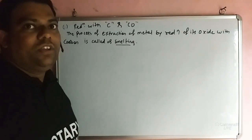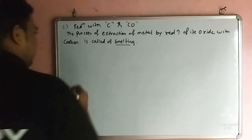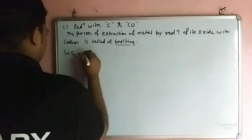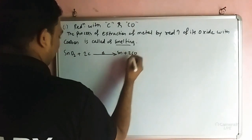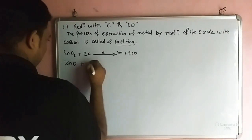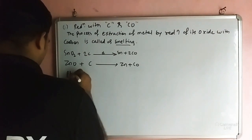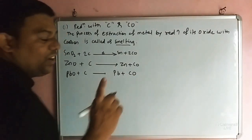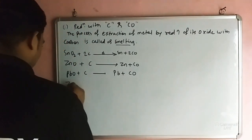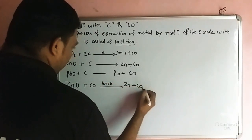Example reactions: SnO2 + 2C on heating gives Sn + 2CO. ZnO reduction with carbon — heating is important everywhere. PbO + C gives Pb + carbon monoxide. Also with carbon monoxide: ZnO + CO at 1600 K gives Zn + CO2.